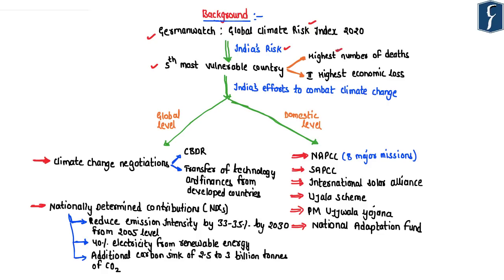Recently, the German Watch NGO published the Global Climate Risk Index 2020, which ranked India as the fifth most vulnerable country to climate change. India faced the highest number of deaths due to climate change and the second highest economic loss. To combat climate change, the Indian government is making efforts at both global and domestic levels. At the global level, India upholds the principle of Common But Differentiated Responsibilities, which highlights that developed countries should take higher responsibility for reducing greenhouse gas emissions and should transfer green technology and finances to developing and poor countries.